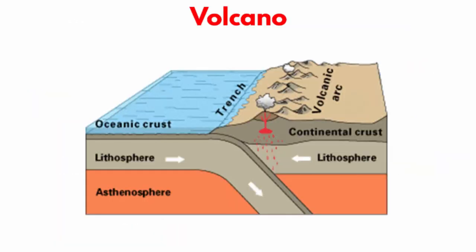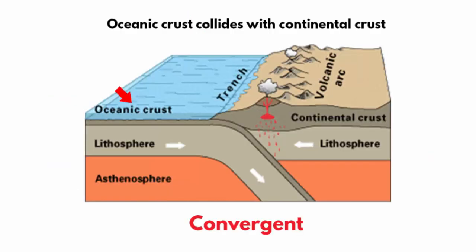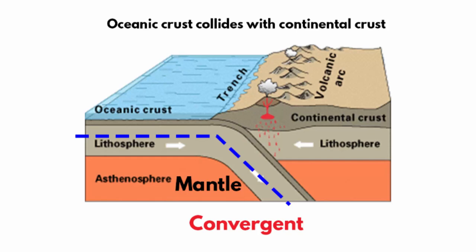When it comes to a volcano, it occurs in areas where oceanic plates collide with continental plates, or when two oceanic plates collide as well as move apart from each other. When an oceanic plate collides with a continental plate, since oceanic plates are denser and heavier, it sinks into the mantle beneath the lighter continental plate — the layer that has magma. When the oceanic plate comes in contact with the magma, it creates huge pressure that causes the magma to push through holes or cracks of the continental crust, causing a volcanic eruption.